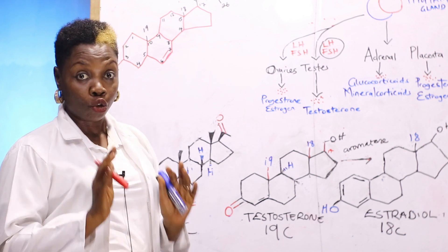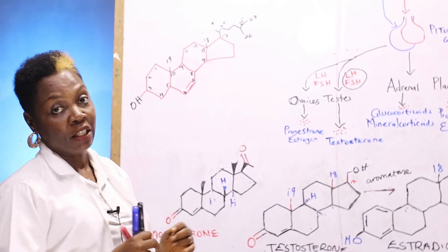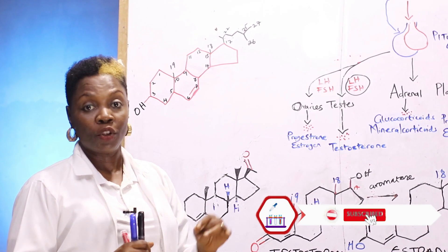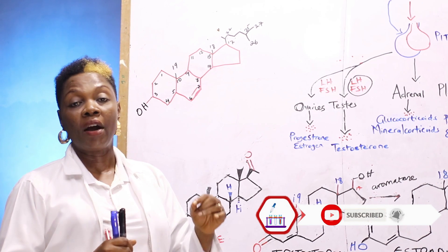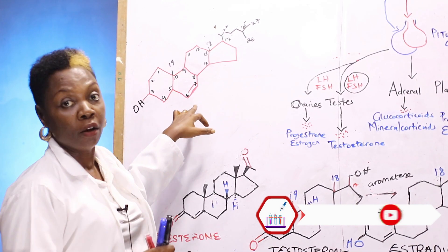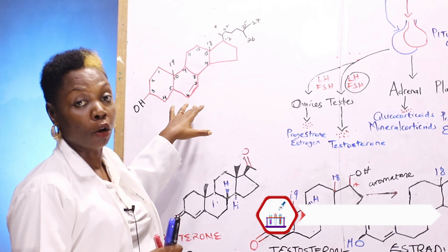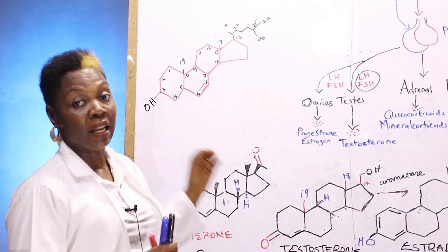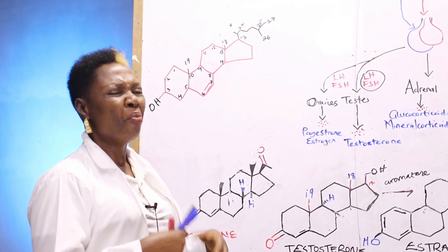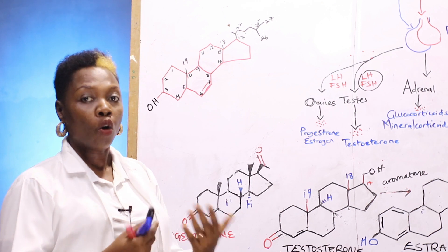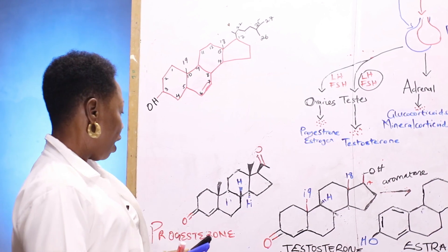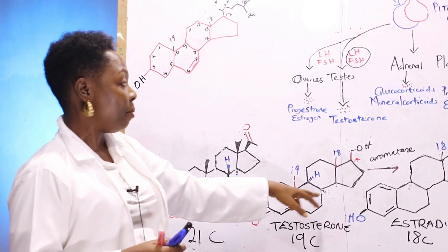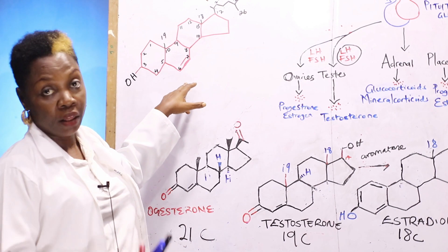Based on structure, we have different classes of hormones. We have steroid-derived hormones. These steroid-derived hormones take their parent structure from the structure of cholesterol. The hormones that mostly fall into this class are called steroid hormones — mostly the reproductive hormones, cortisol, and aldosterone. We have progesterone, testosterone, and estradiol. We see that they share the same parent structure as cholesterol.